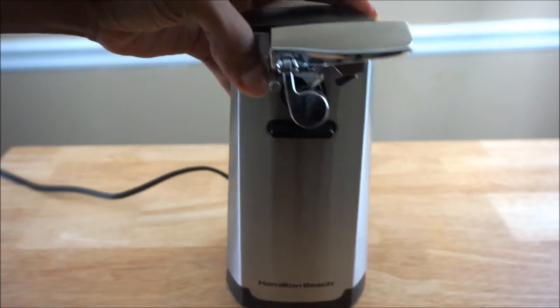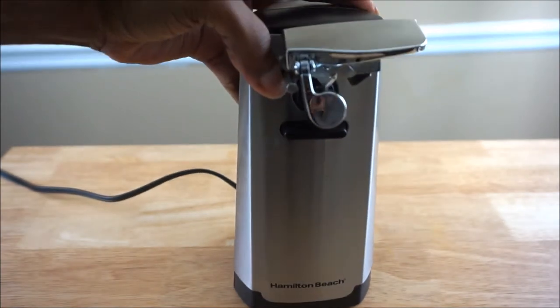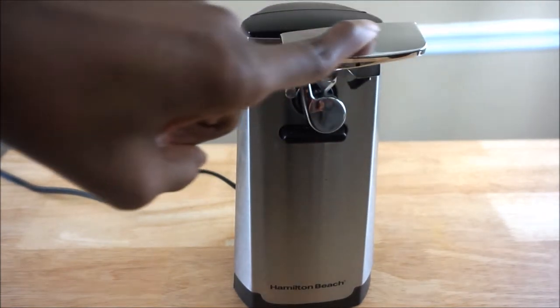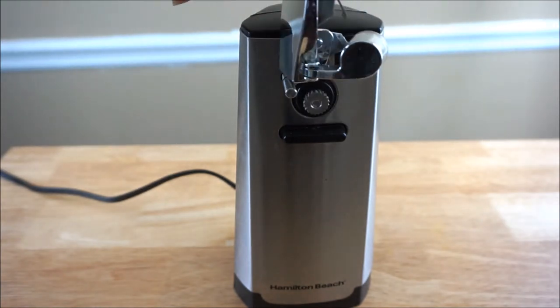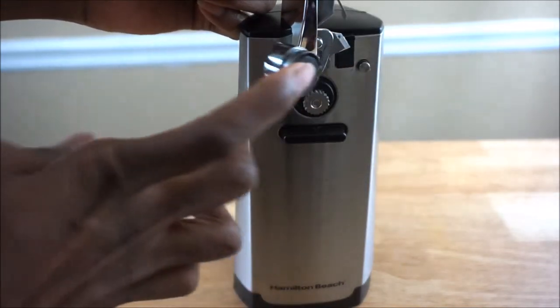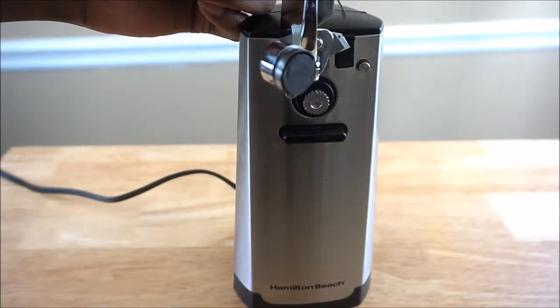The Hamilton Beach can opener is very lightweight and can fit in most spaces. It has a lever that lifts very easily and holds the magnet that grips to the can to keep it in place and prevent the can from falling.